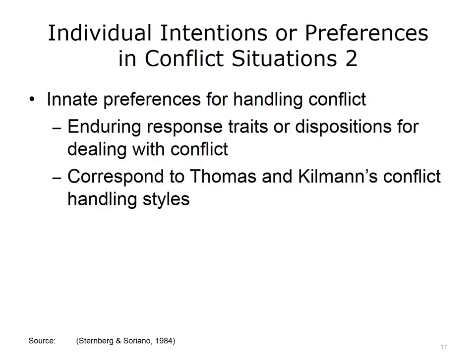Research reveals that individuals have certain innate preferences for handling conflict, and that these correspond to Thomas and Kilman's conflict-handling styles. Sternberg and Soriano suggest that it may be more fitting to think of the five conflict-handling styles as relatively enduring conflict-response traits or preferences, as opposed to alternative choice behaviors people can choose to best match a particular conflict. In other words, when faced with conflict, some people will prefer to win, others will be obliging, others will want to ignore the conflict, others will choose to lose a little if they win some, and yet others will seek the most favorable result for all.